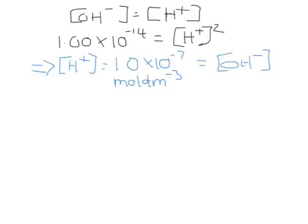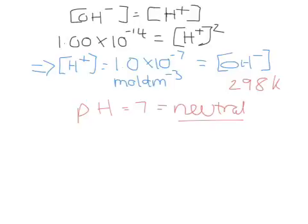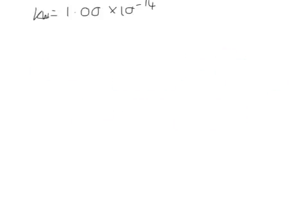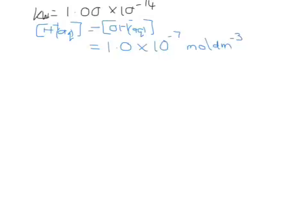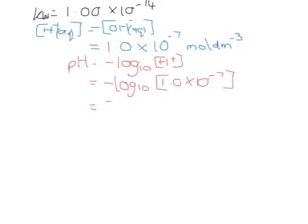Don't forget that this is at standard conditions at 298 K. We know that a neutral aqueous solution has a pH of 7, and we can use the ionic product of water to prove this. At 298 K, KW = 1 × 10⁻¹⁴, and the hydrogen ion concentration equals the hydroxide ion concentration, equal to 1 × 10⁻⁷. Using pH = −log[H⁺] gives pH = 7.